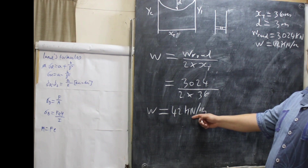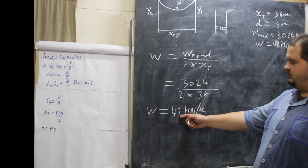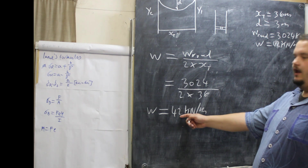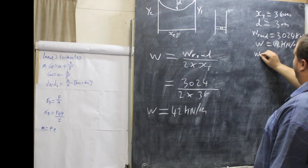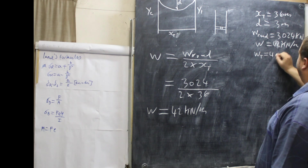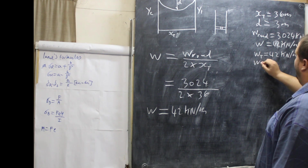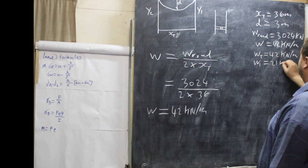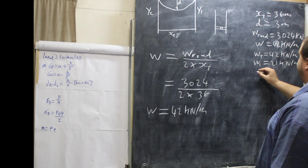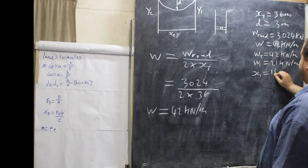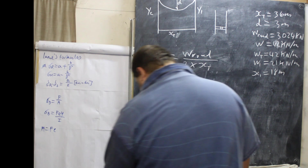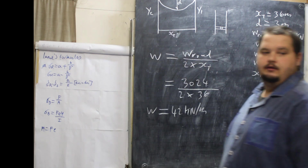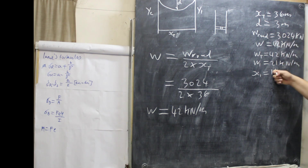So 42 kilonewtons per meter is the weight total for both cables together. Weight 1, for one cable, is 21 kilonewtons per meter. X1 is 18 meters — half of the 36-meter span — which will become relevant when we find the minimum and maximum tension in each cable, as we now deal with one cable.